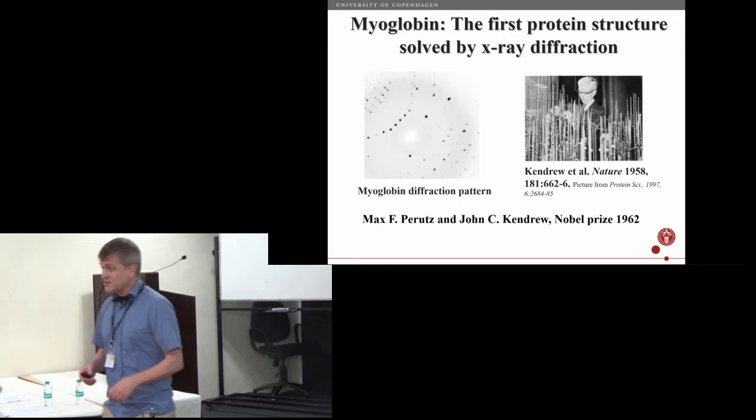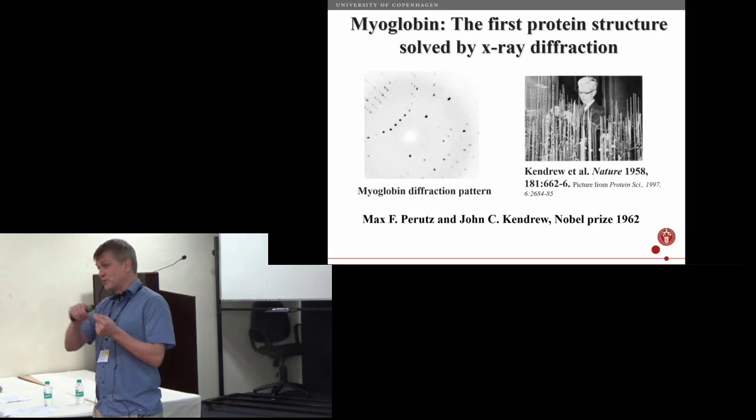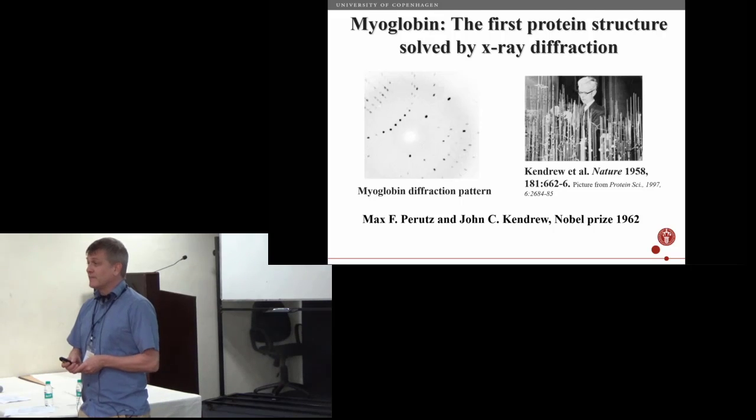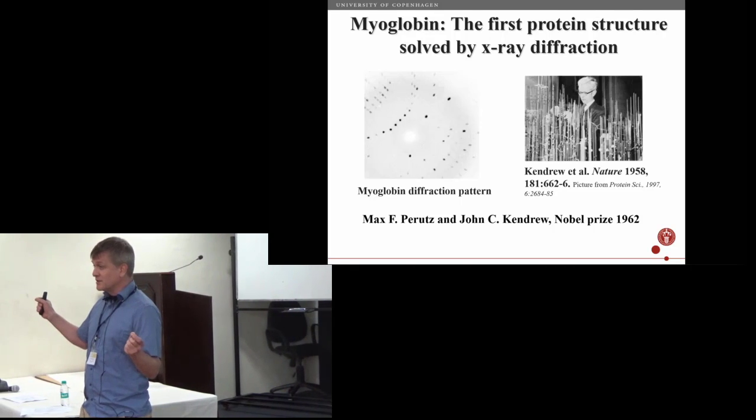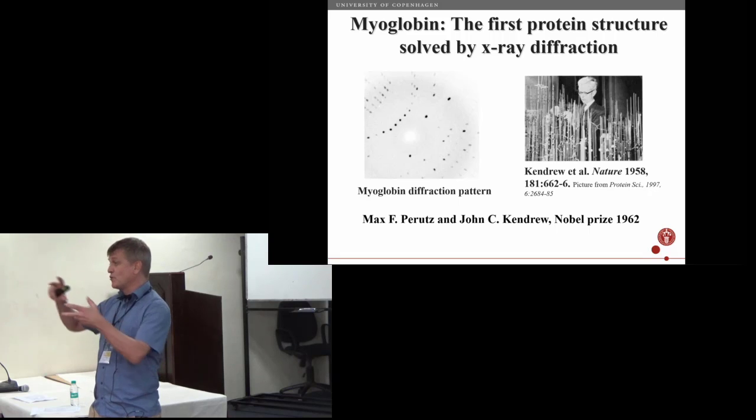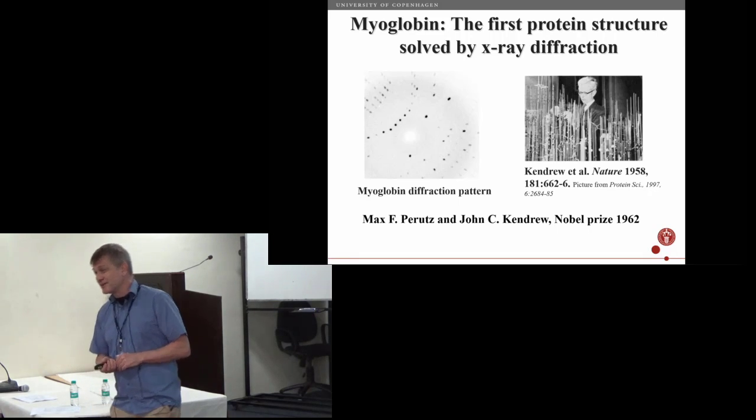So proteins are polymers of amino acids, typically a hundred of them or more put together in a long string, and the amino acid composition dictates how the proteins fold up into a three-dimensional structure. This is the normal paradigm in protein structure biochemistry.